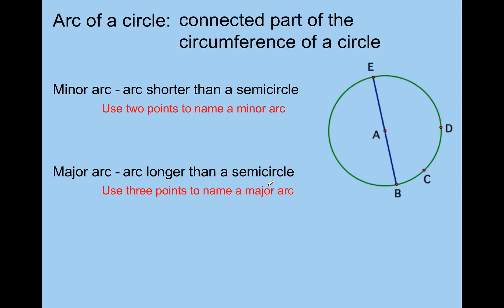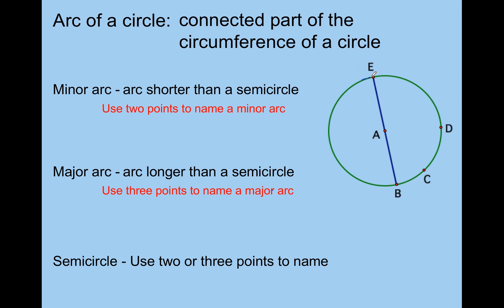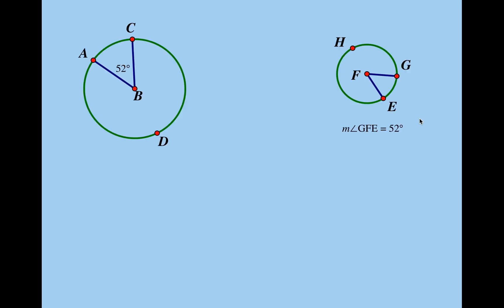The last type of arc is known as a semicircle. A semicircle is exactly half a circle. You can use two or three points to name it — it's up to you. So for example, here's a semicircle. You could name it arc EB with two points, or arc EDB with three points. Either way, it doesn't matter because you're going around half a circle — it's not going to make a difference.